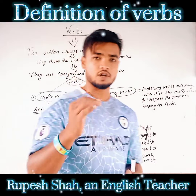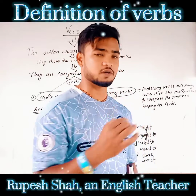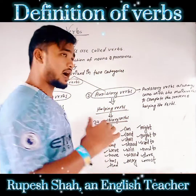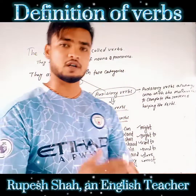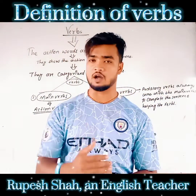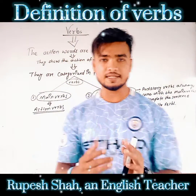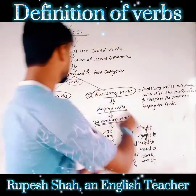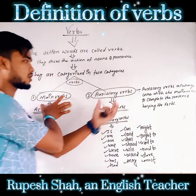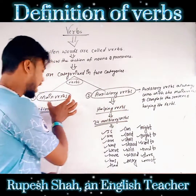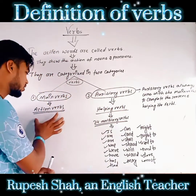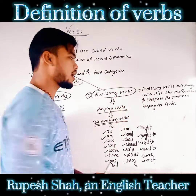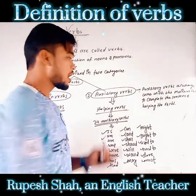I am going to repeat once again the chapter Verbs. Verbs are the action words that show the actions of nouns and pronouns. Verbs are categorized in two different categories: main verbs and auxiliary verbs. Main verbs are also known as the action verbs, and auxiliary verbs are also known as the helping verbs.